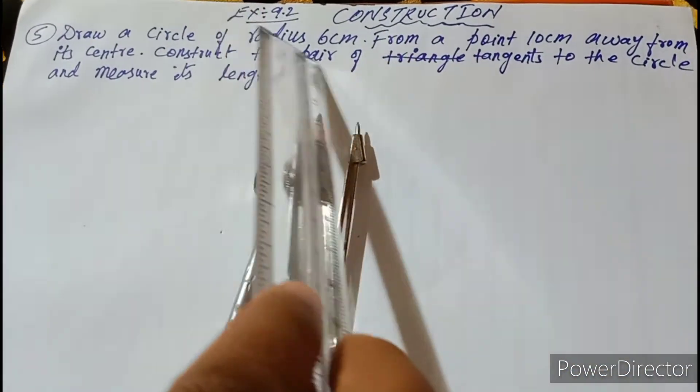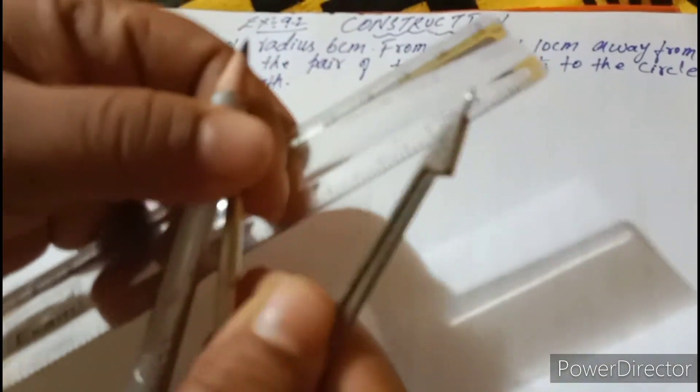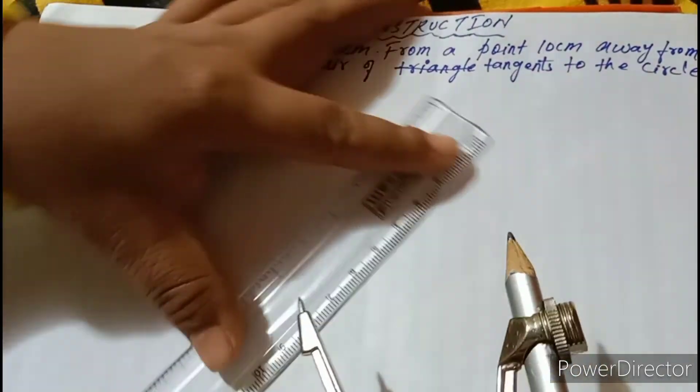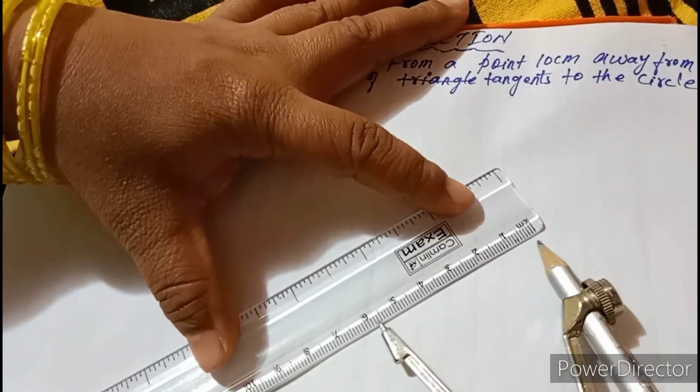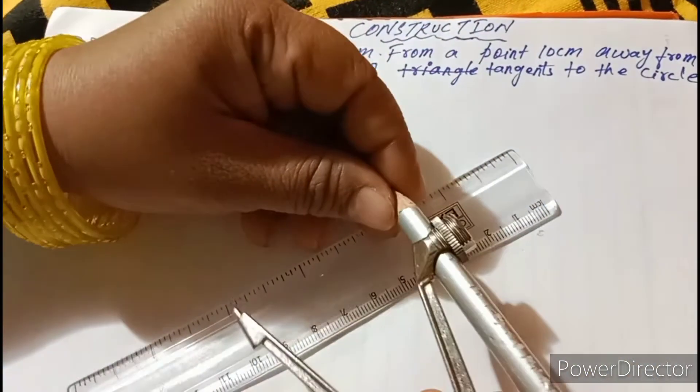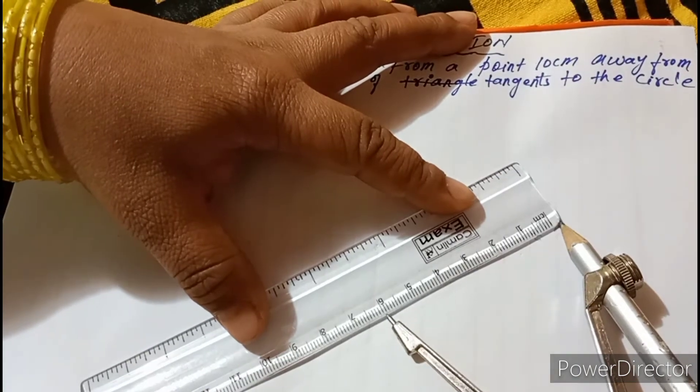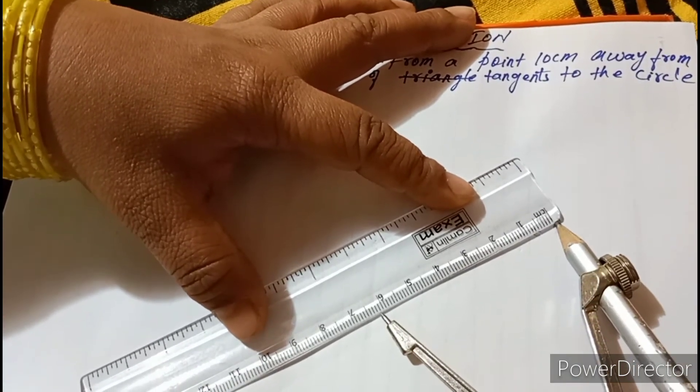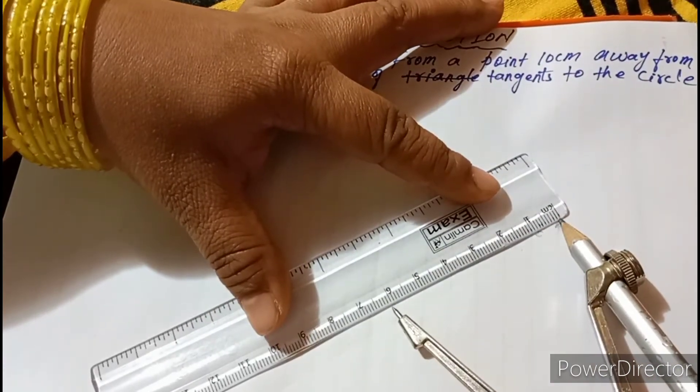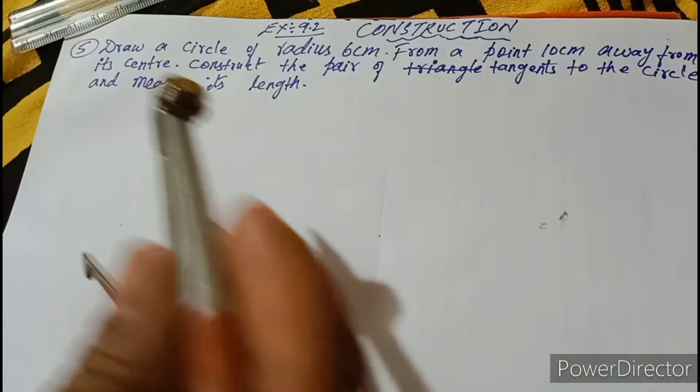Check here, the radius is 6 cm. With the help of the scale and with the help of the compass, we are going to draw a circle of radius 6 cm. From here to 6 cm. Check it once. A little bit, move this one. From 1 to 6, exactly it should be 6.